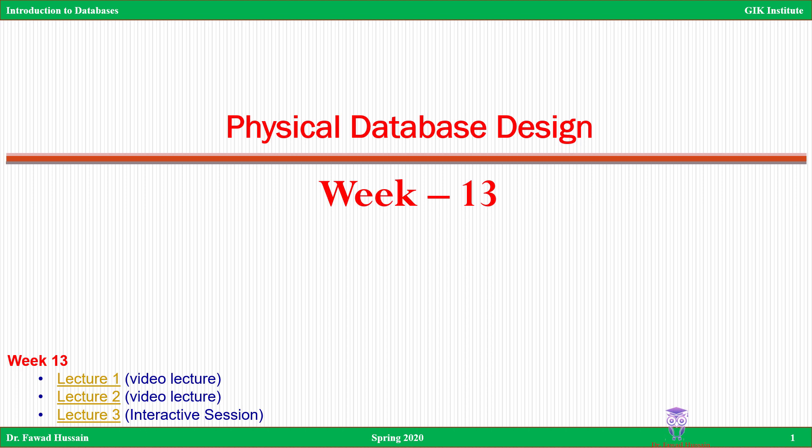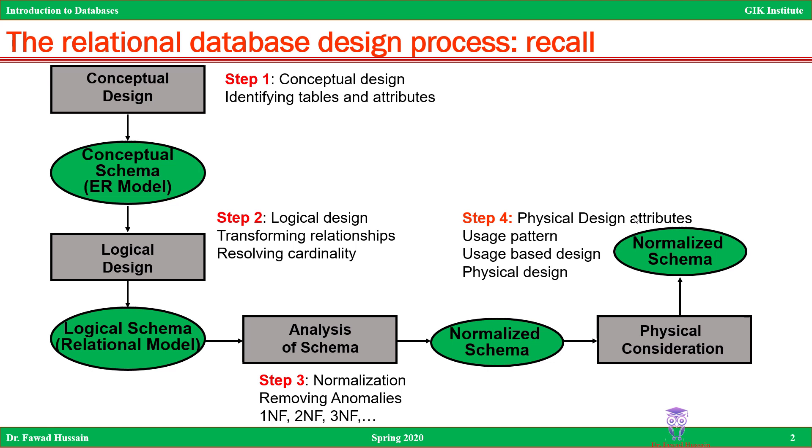In the physical database design, what we have done so far we are going to translate into how we are going to implement this on the database system and on the machine. So what we have been doing is making tables, finding attributes, and deciding what kind of attributes there are going to be, but we have not talked about the implementation part specifically related to the database and hardware, as well as conditions related to usability — how frequently the data is used, whether you want a backup, redundancy, or fast access. So to avoid confusion, here is an overview of what we have done and where we are exactly.